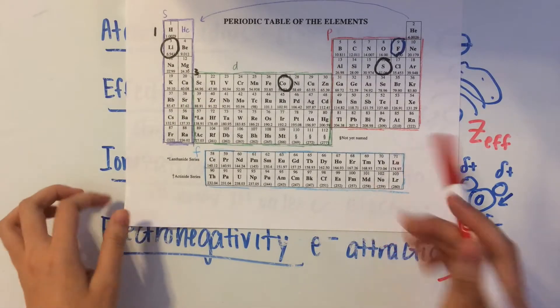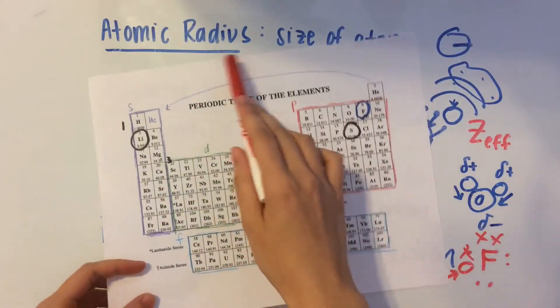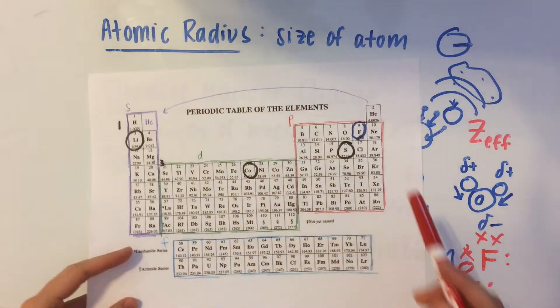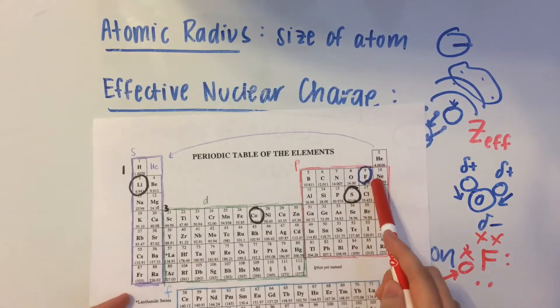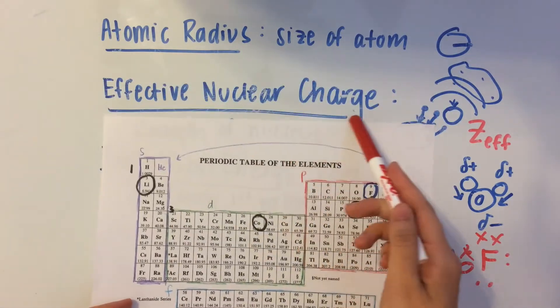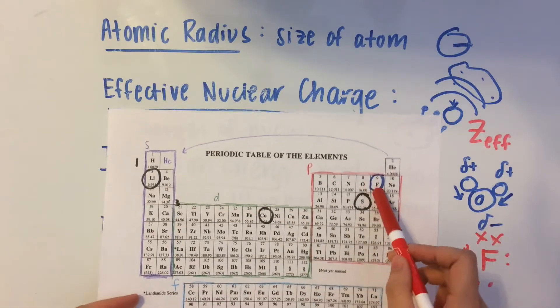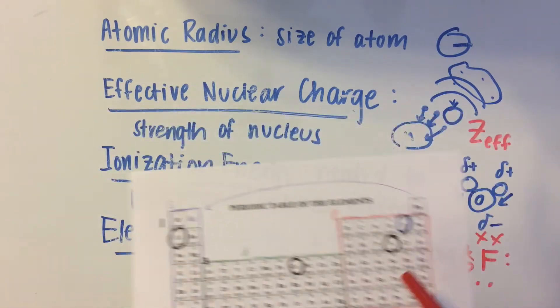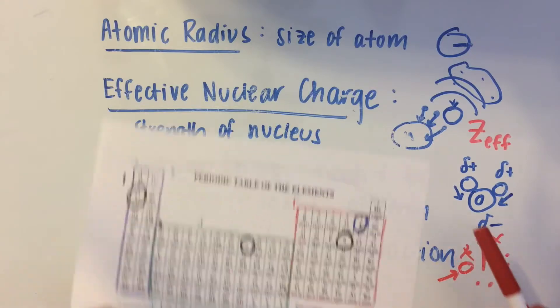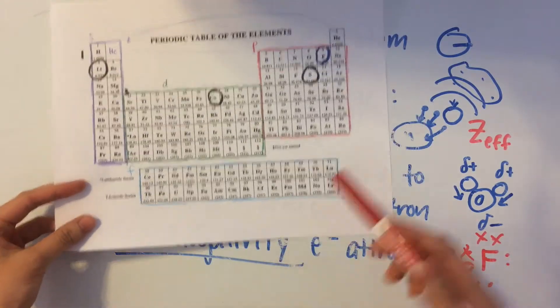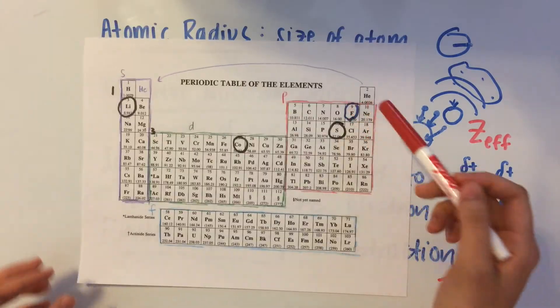So I remember that fluorine is the smallest, it has the smallest atomic radius. It has the greatest, well, some of the greatest effective nuclear charge. It has a very high ionization energy, and its electronegativity is extremely high as well.